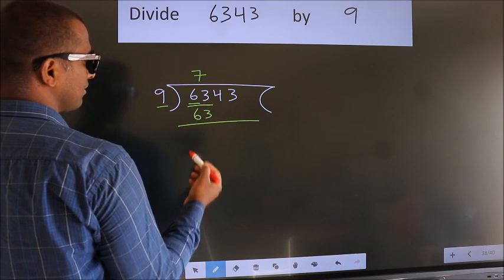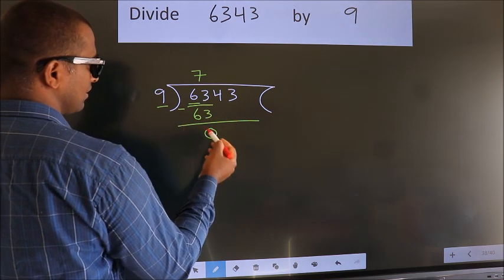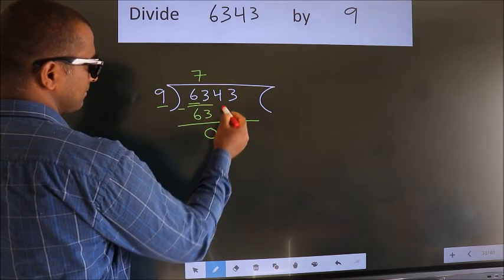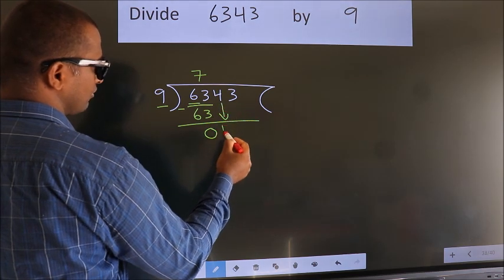Now we should subtract. We get 0. After this, bring down the beside number. So 4 down.